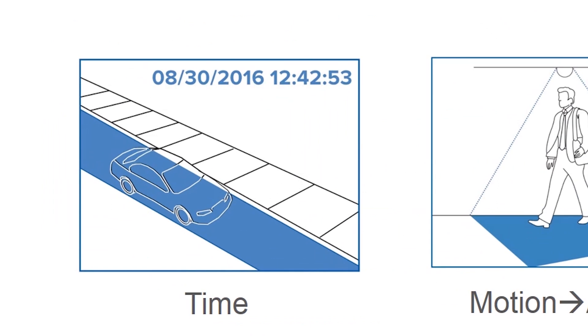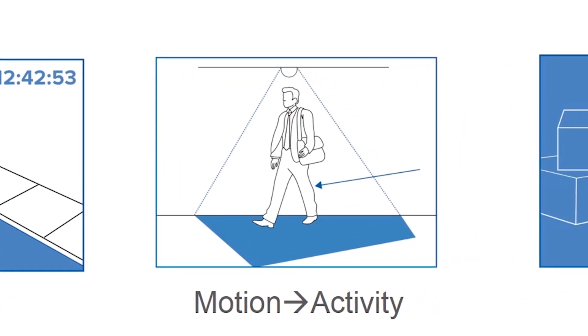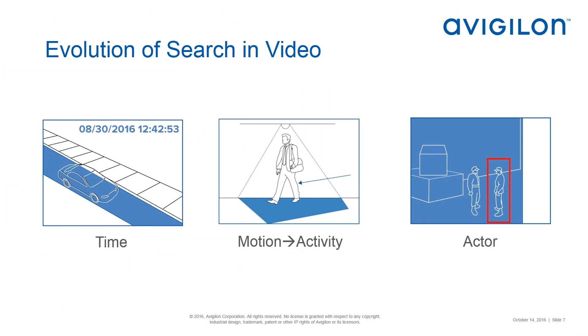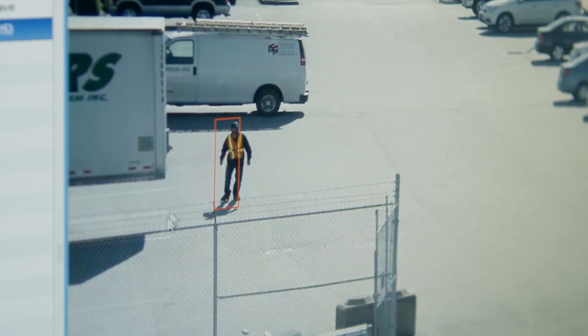Search has been around for many years in the context of video surveillance. Time-based searches are a basic feature available in pretty much every video surveillance system. Motion-based searches are probably the next most sophisticated, also available in nearly every system. More recently, with the common occurrence of video analytics, we're able to search not just by motion but really by activity — activity involving not just anything that moves, but persons and vehicles specifically. This includes understanding whether those persons and vehicles are doing something interesting, such as loitering for a certain amount of time or congregating in groups. Searching by activity is becoming increasingly common.